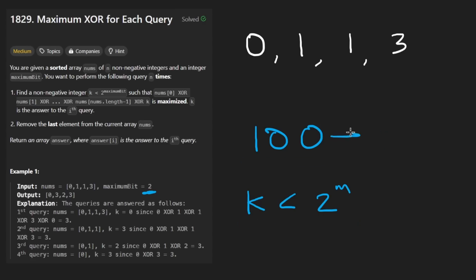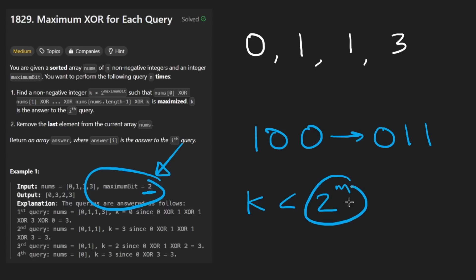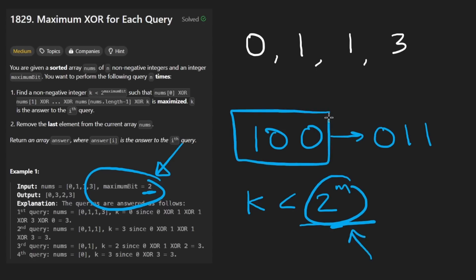In binary, three looks like 011. Since we're always working with two to the power of some exponent, that number in binary is always going to be one followed by some number of zeros. Once we subtract one from it, it becomes just a bunch of ones. That's going to be important in a minute.